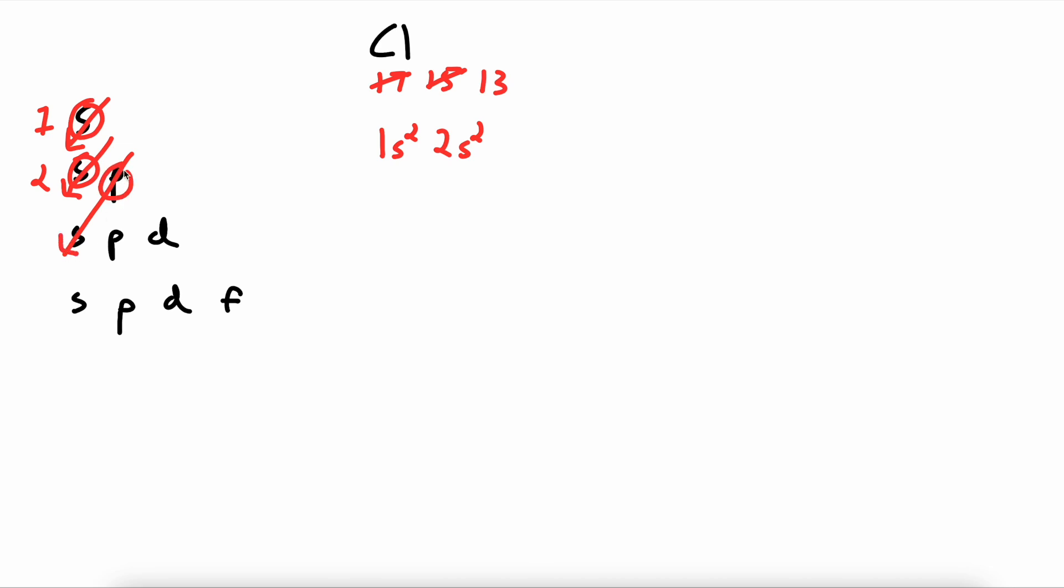This time we hit a P first in the second energy level. So we write 2, P, 6. Crossing out 6. And now we've hit an S in our third energy level. So we write 3, S, 2. Crossing out 2.